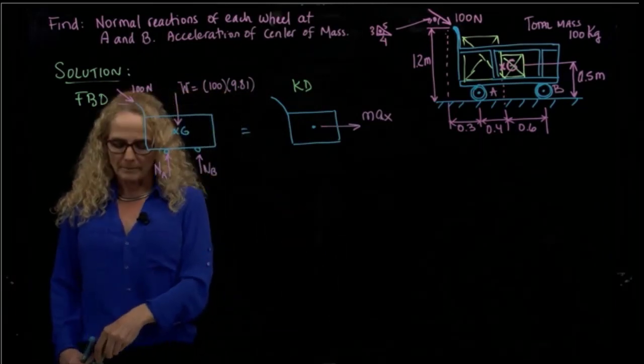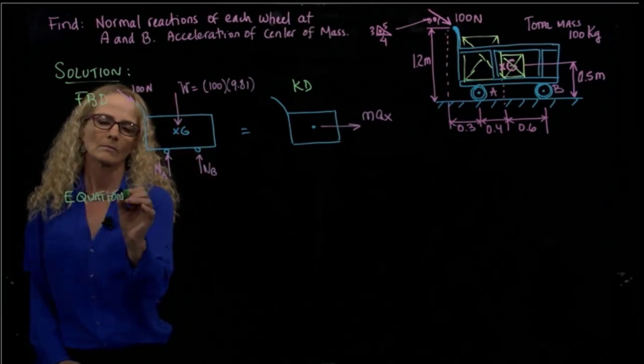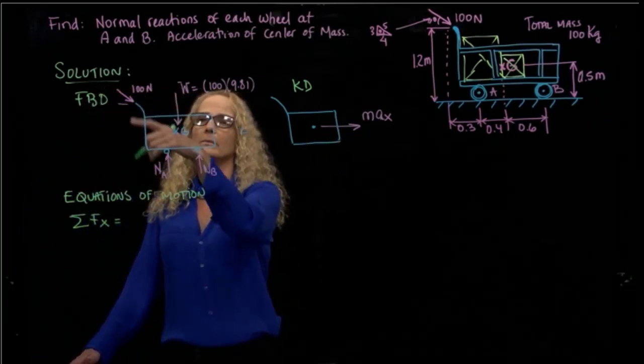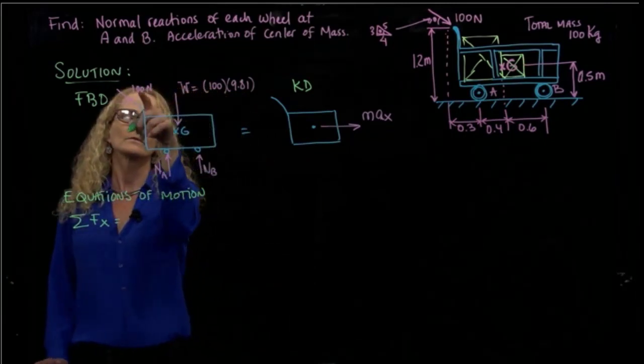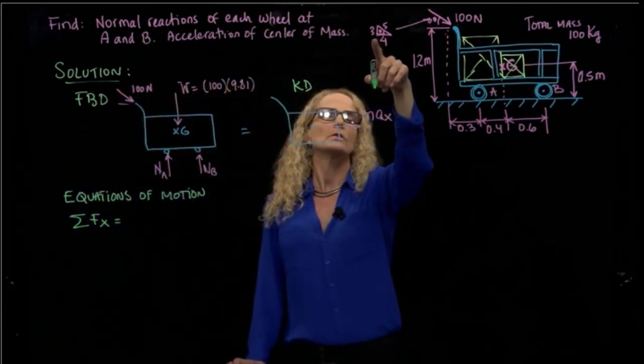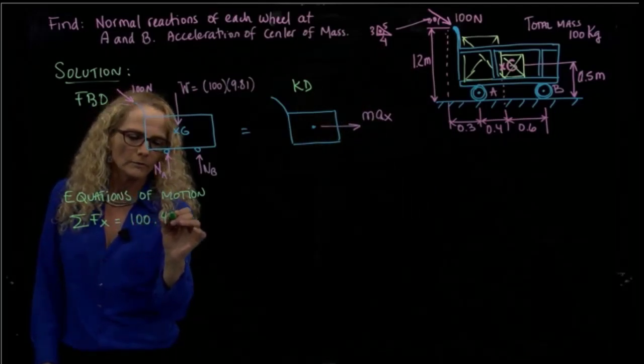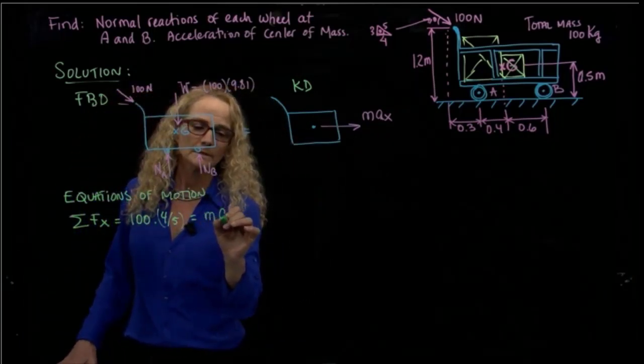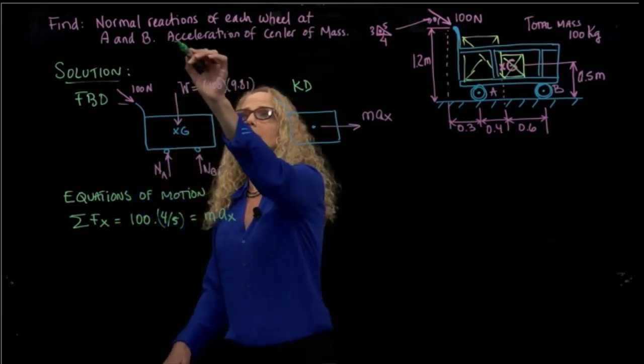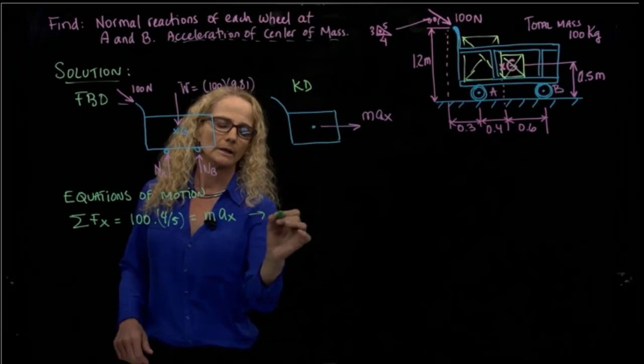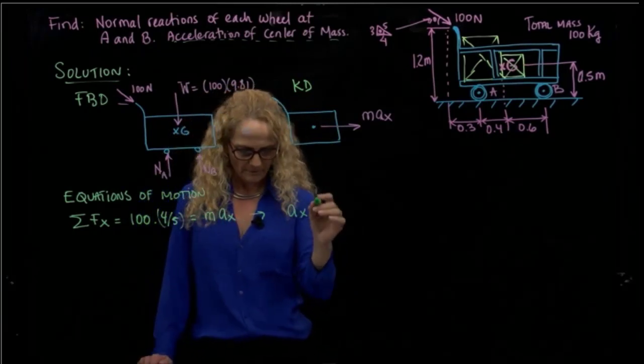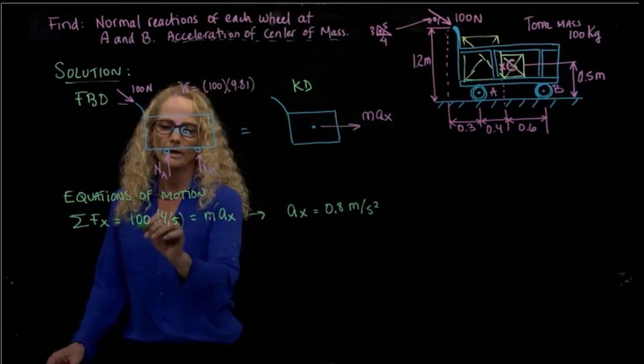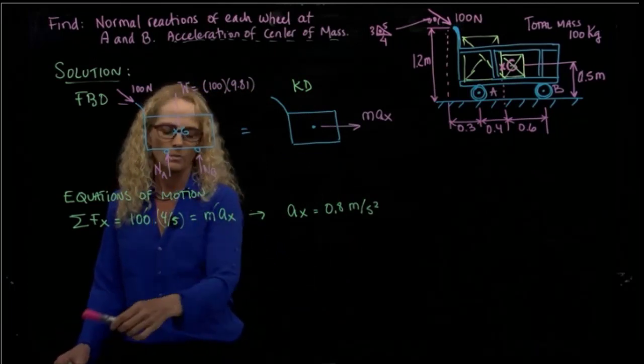Now that we have our free-body diagram and our kinetic diagram, we can apply our equations of motion. We add forces in X, and we see that the only component that we have here is our X component of this applied force. And as we see here, it's 4/5, so 100 times 4/5 equals to my mass times the acceleration. So from here, we can get the second question that we are asked. The acceleration in X direction will be 0.8 meters per second squared. When those two go away, and this is just 4/5, which is 0.8.